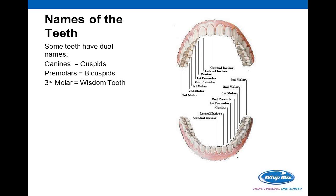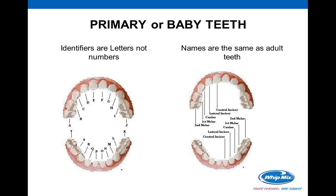Some teeth have dual names: canines are often called cuspids, premolars are called bicuspids, third molars are often called wisdom teeth — they'll often be used interchangeably. For primary or baby teeth, identifiers are letters rather than numbers, starting with the patient's upper right molar as A and running around through the alphabet. The names, however, are the same: central incisor, lateral incisor, canine, first molar, second molar.